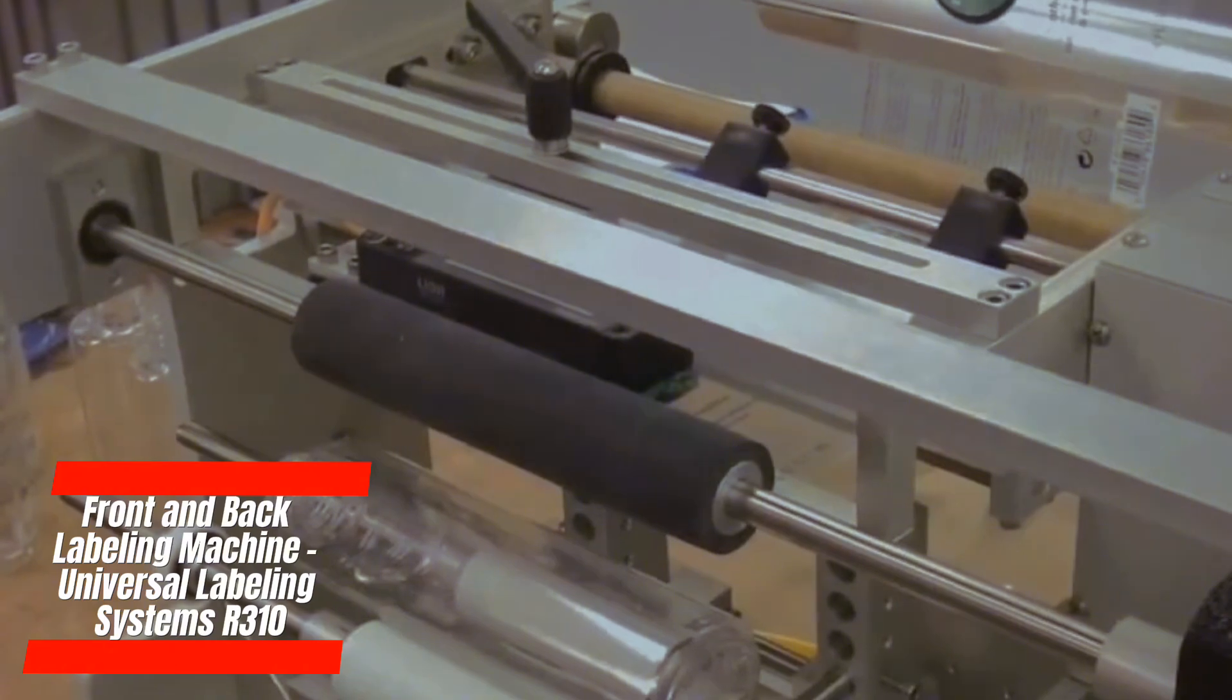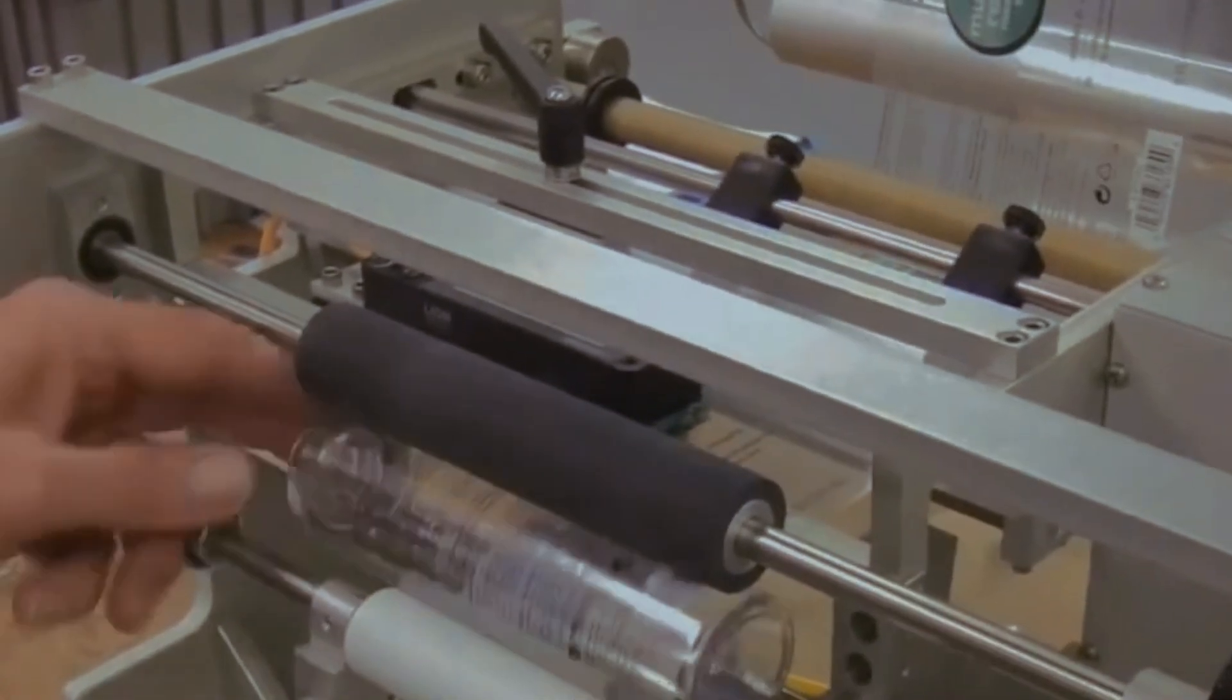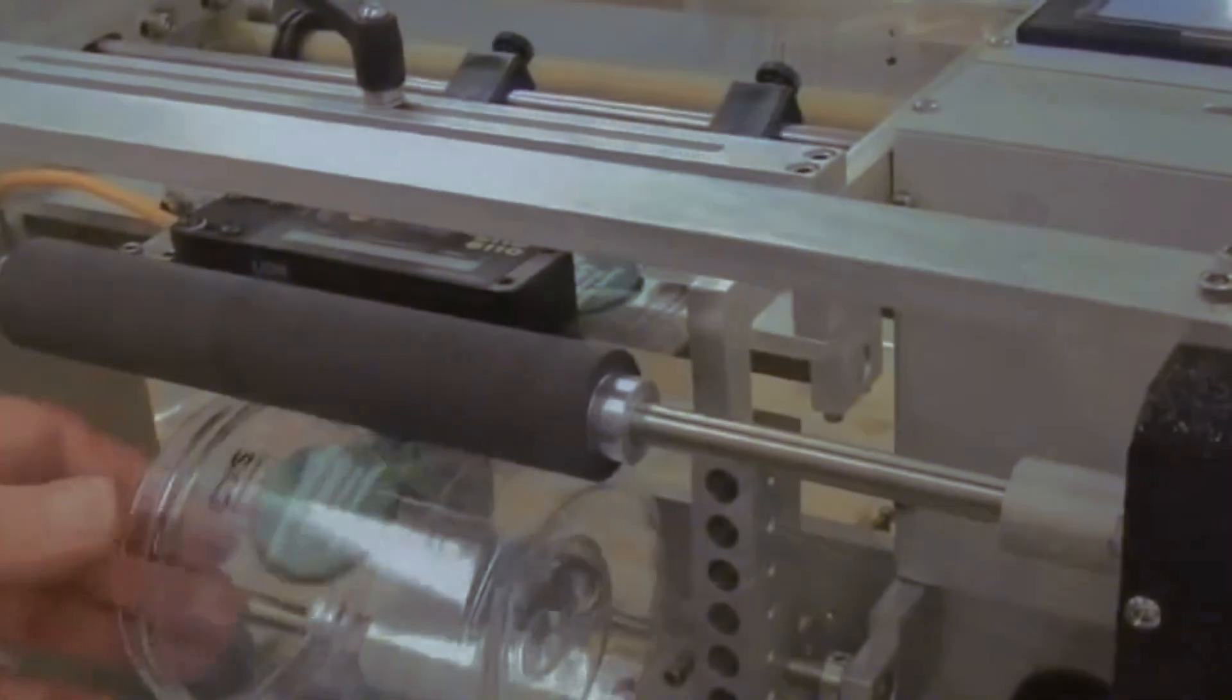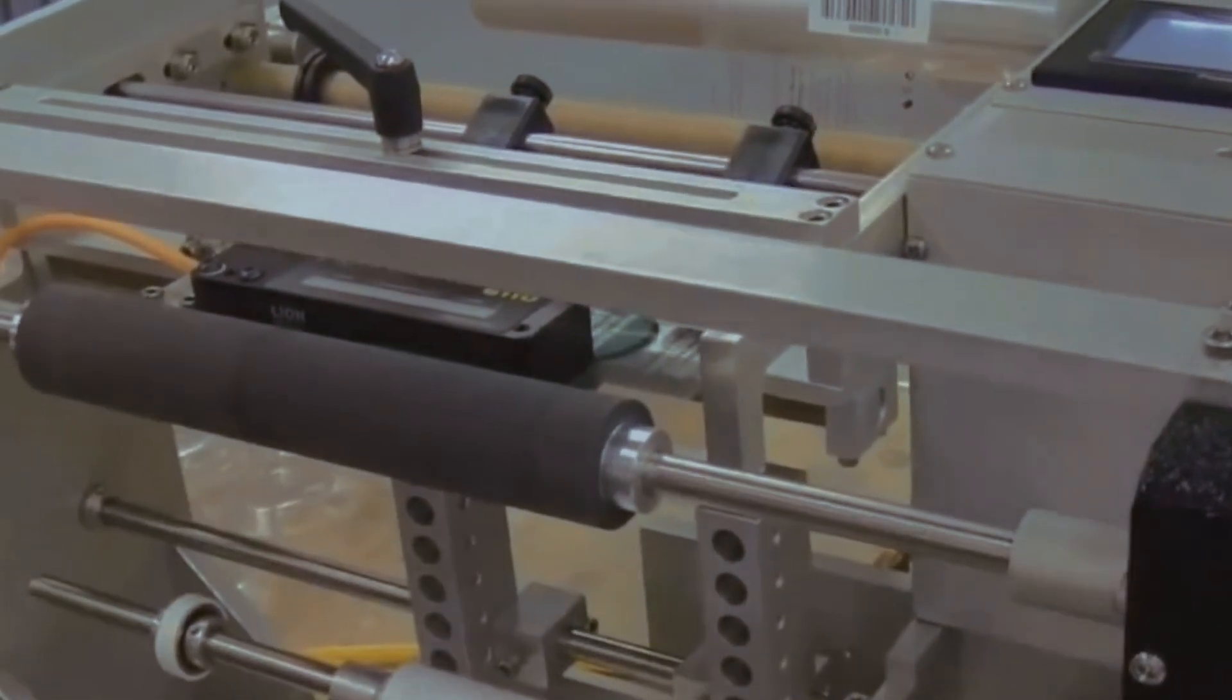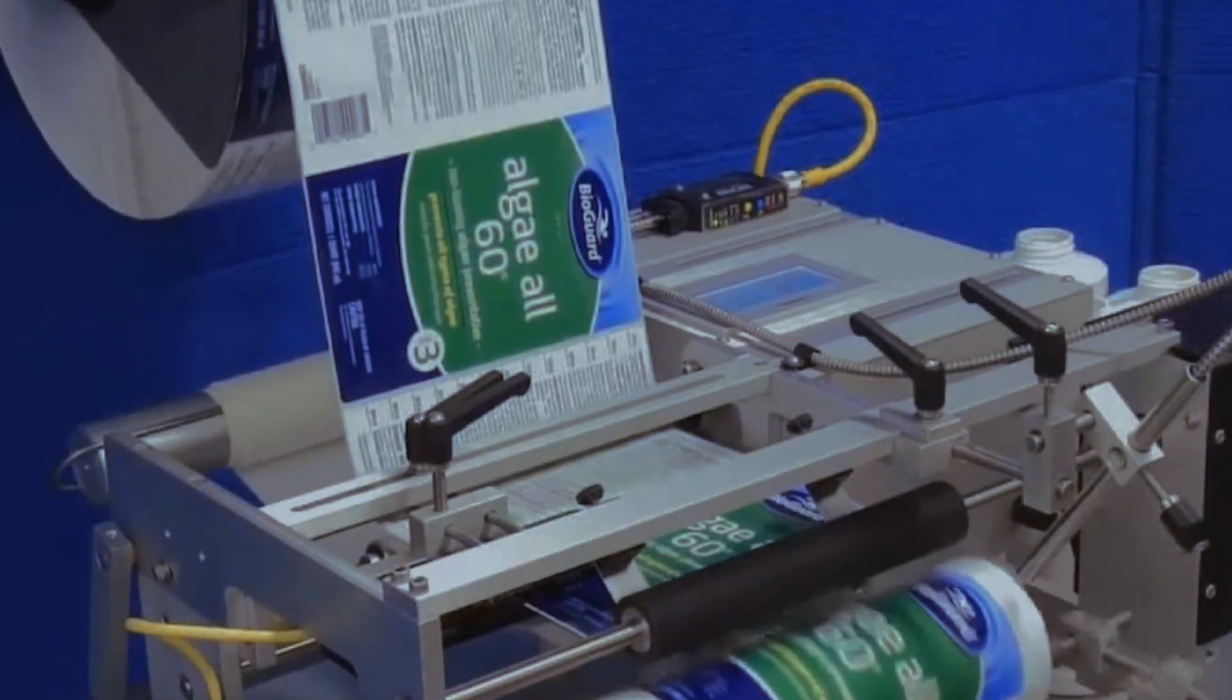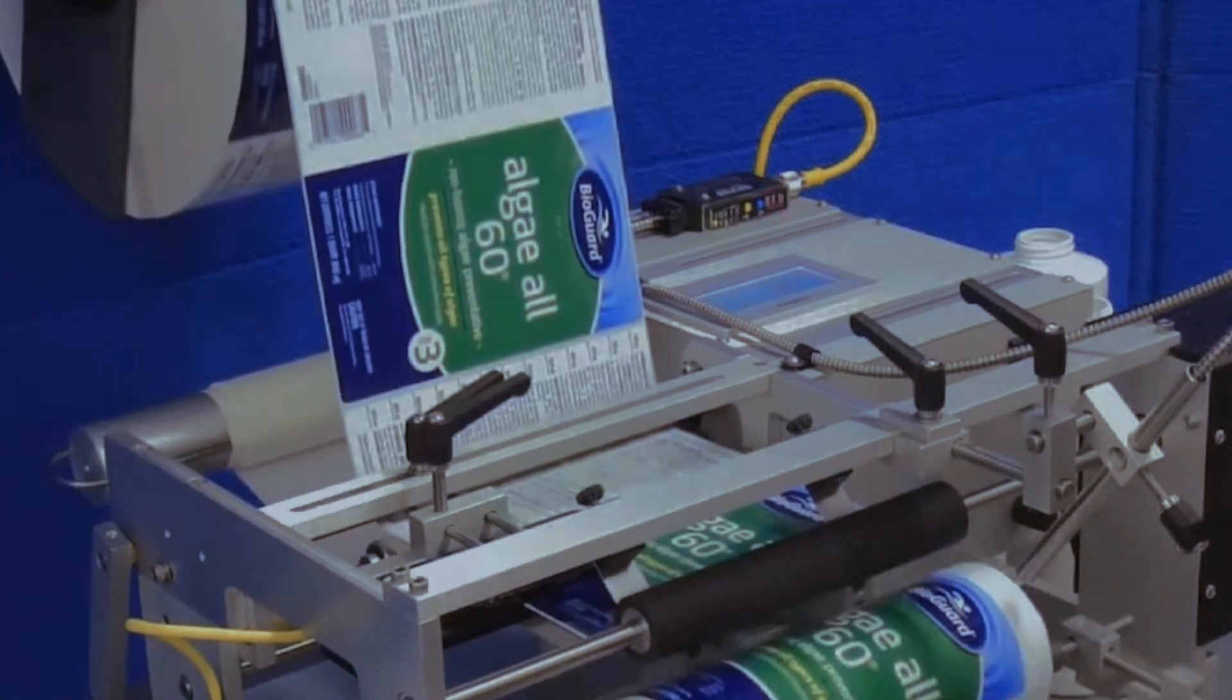The Universal Labeling System's R310 is specifically designed for the simultaneous application of labels to both the front and back of products. Its dual labeling heads and advanced synchronization mechanisms ensure precise alignment and placement, even on irregularly shaped containers. The R310's versatility extends to its labeling capabilities, accommodating various label sizes and materials to meet diverse packaging requirements.